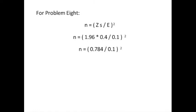The first thing we would do is multiply 1.96 times 0.4, which gives us 0.784 divided by 0.1 squared. When we divide that amount, we come up with 7.84 squared, which gives us 61.47.